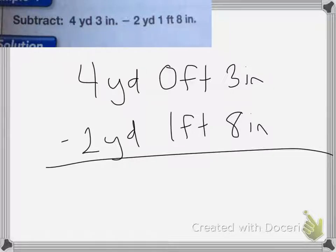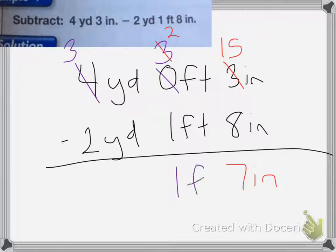Okay, on this one, I'm going to have to borrow from the yards. Yards will become a 3. 0 will become 3 feet. And then I need to borrow from that 3 feet, which becomes 2, and add 12 inches to my 3 inches, because there's 12 inches in 1 foot. So 12 plus 3 is 15 inches. So 15 minus 8 is equal to 7 inches. 2 minus 1 is equal to 1 foot. 3 minus 2 equals 1 yard. So I end up with 1 yard, 1 foot, and 7 inches.